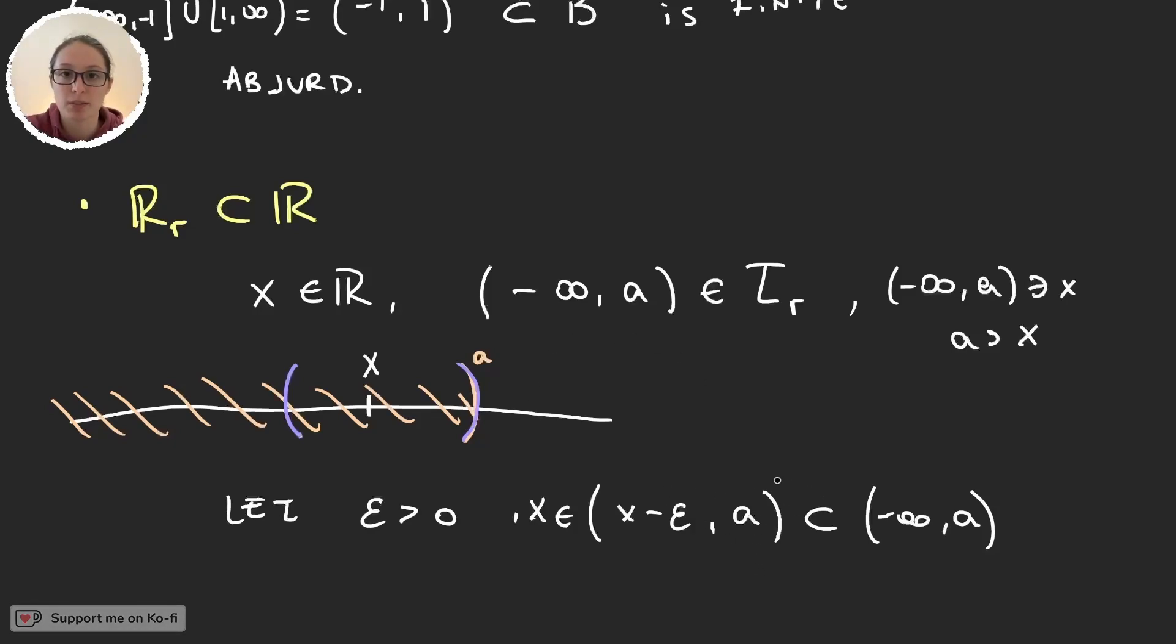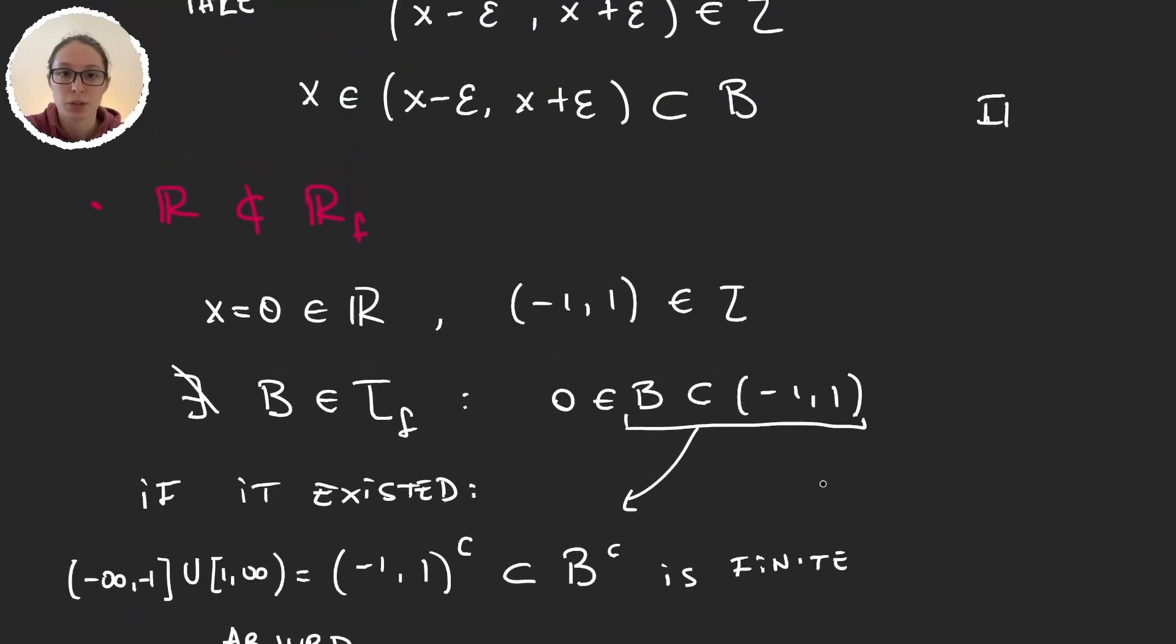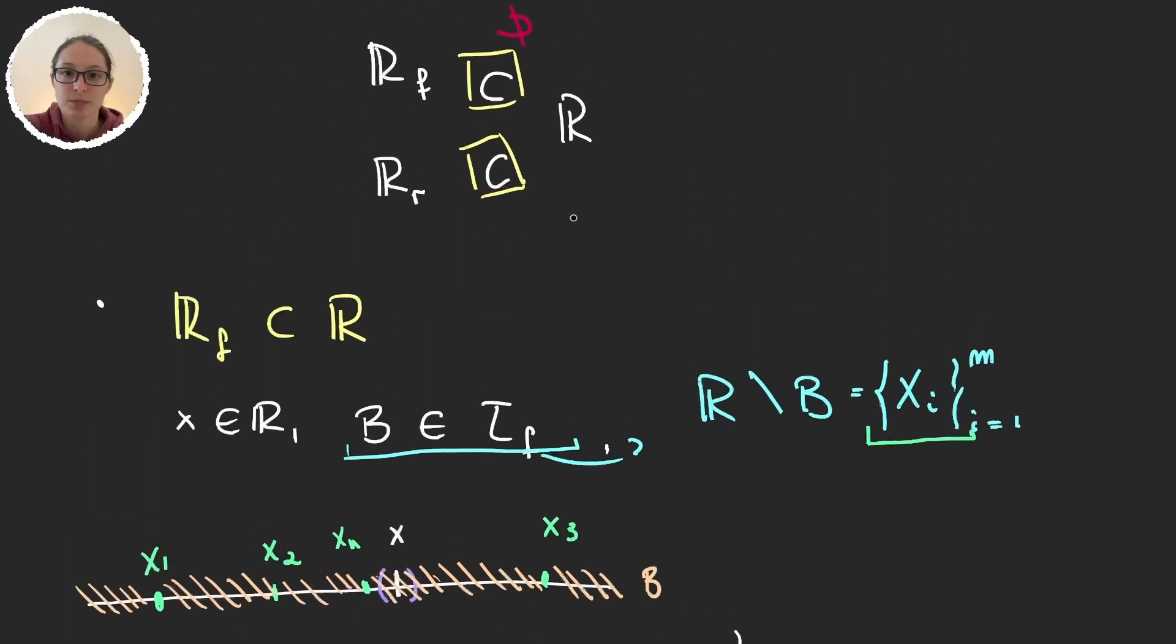And so we have the inclusion that we wanted to prove. This is, again, using the lemma. And like before, we also have to prove that the standard topology is not a subset of the ray topology.